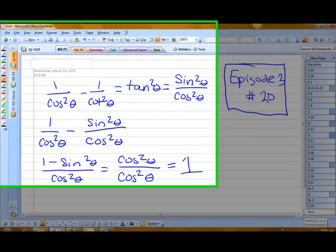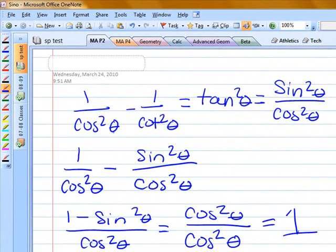This problem is from episode 3, number 20. The problem is 1 over cosine squared theta minus 1 over cotangent squared theta.